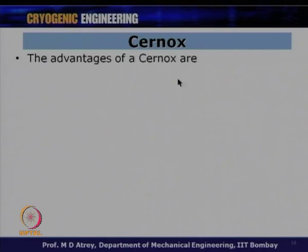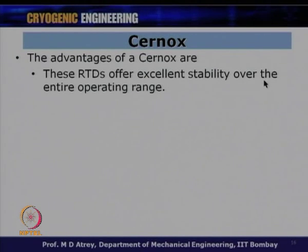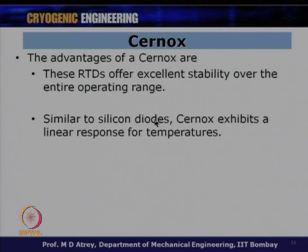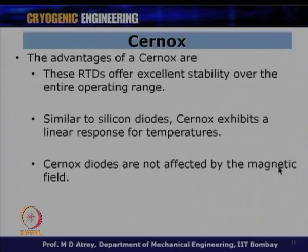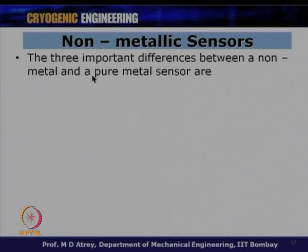The advantages of Cernox are that these RTDs offer excellent stability over the entire operating range. Similar to silicon diodes, Cernox exhibits a linear response for temperatures. Importantly, Cernox sensors are not significantly affected by magnetic fields — which is one of their biggest advantages. This is a key difference from silicon diodes.